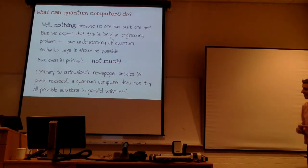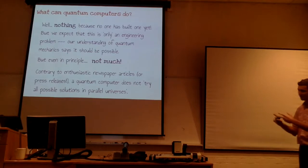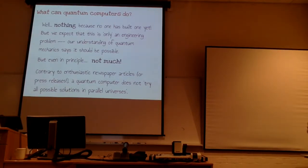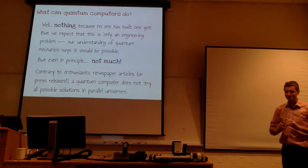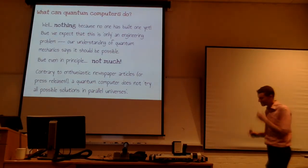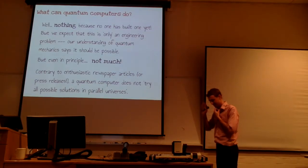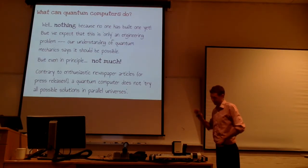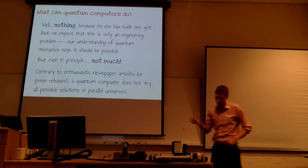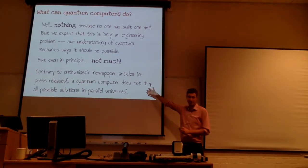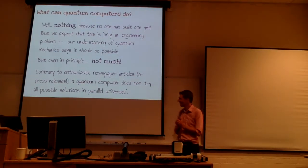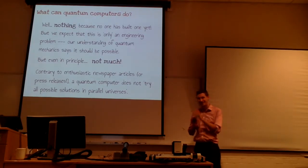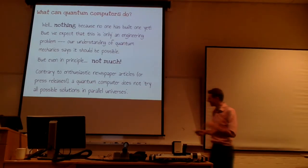It really annoys me every time I see a student paper, article, press release, or hear talks given by professors who study quantum computing who should know better: quantum computers do not try all possible solutions to the problem in parallel universes. No matter how many times people repeat that. My goal is to try and give an explanation of what quantum computers do that is more honest than this stupid explanation, but also relatively understandable and without any scary mathematics.